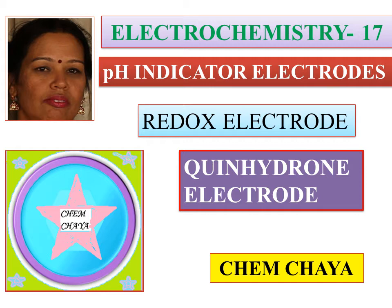I am going to upload the chemistry BSc syllabus. I am going to upload this series in the 5th and 6th semester, uploading chemistry chapters and episodes. In this series, I am going to cover the quinone electrode, which can be used as a redox electrode and pH indicator electrode. This chapter will be uploaded in 16 videos — it is a very important and big chapter.